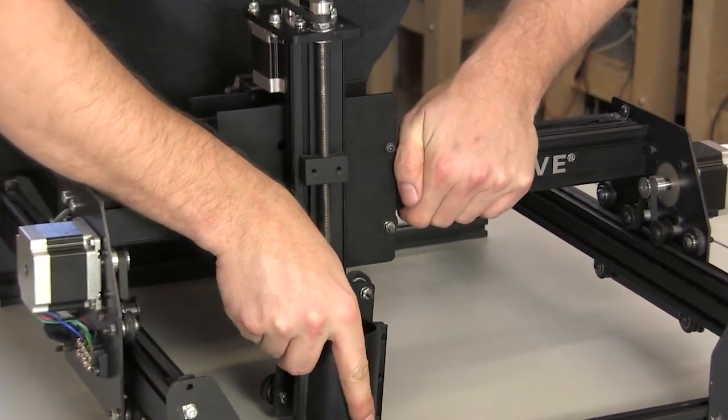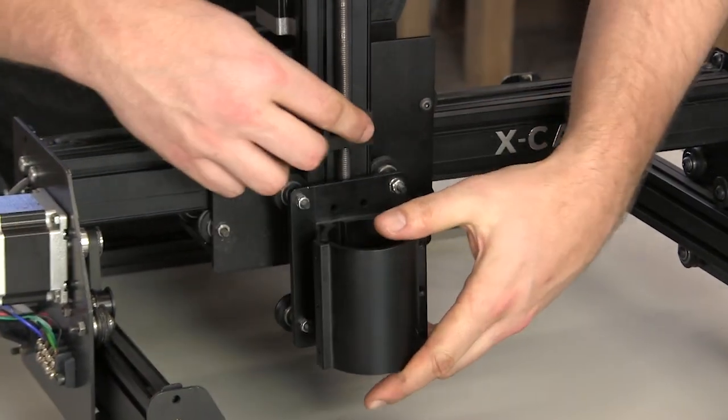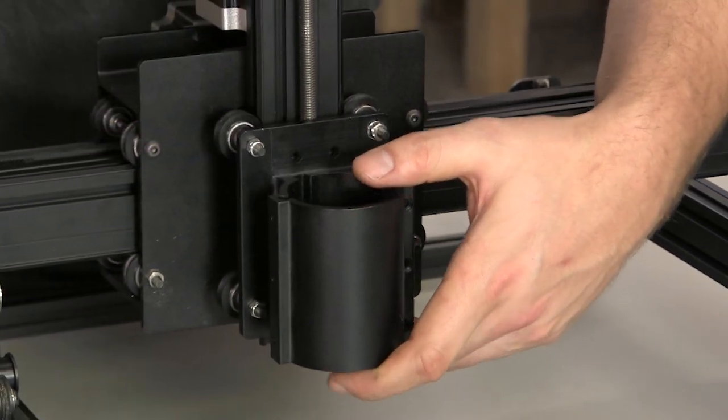Slide the spindle mount onto the Z-axis. If you're having trouble, check the orientation of your eccentric nuts.